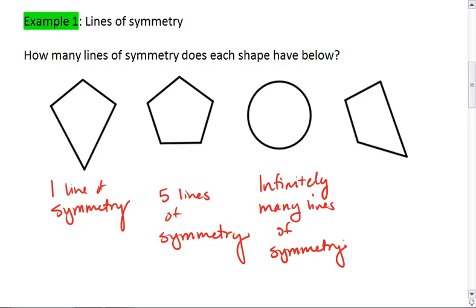And lastly, we have what appears to be a trapezoid, but we realize there's no way to cut this trapezoid such that if we were to reflect it, we would get the same exact shape in the same exact position. So there is no line of symmetry. And there's all your answers for lines of symmetry.